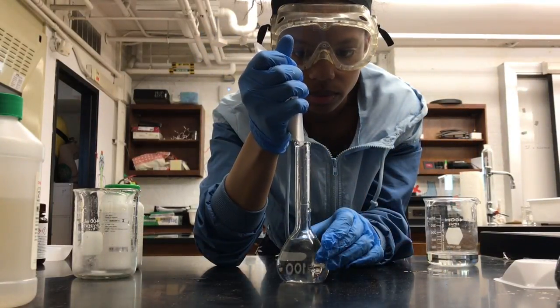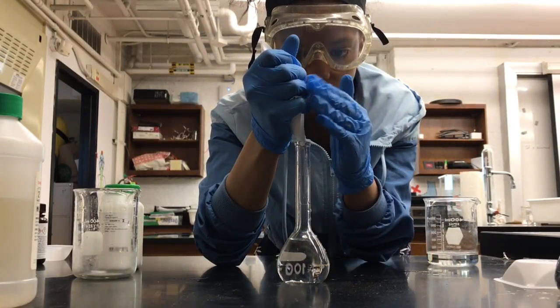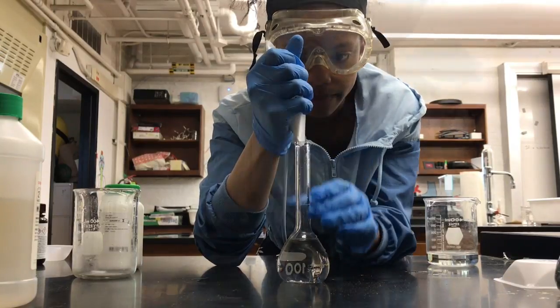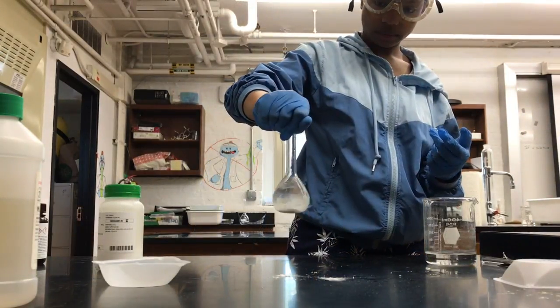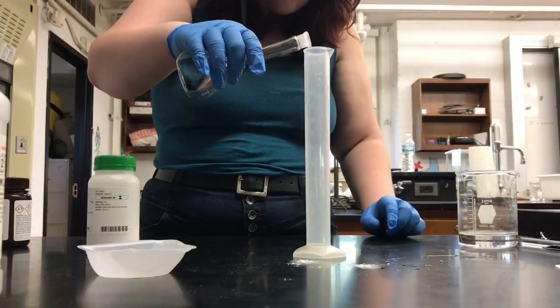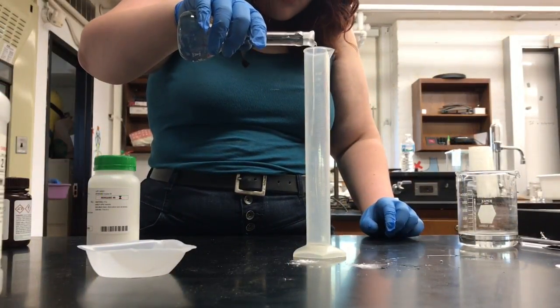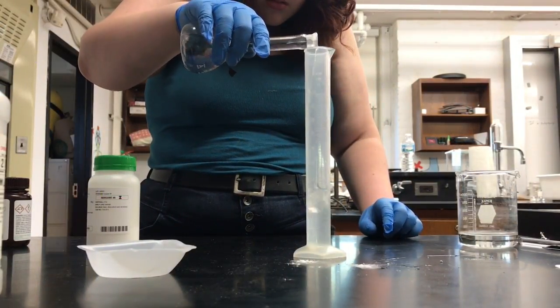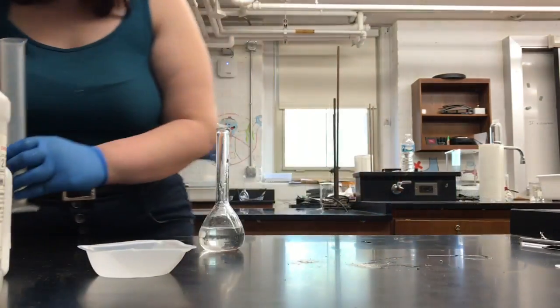Once the sulfuric acid is diluted, you then add the 4.3 grams of potassium iodate and mix it. Make sure that it is completely dissolved before you pour it into the graduated cylinder. Measure out 40 milliliters of that new solution and then cap it to save it for later.